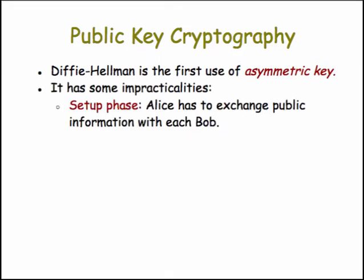As we saw, it requires a setup phase in which Alice has to exchange some public information with Bob — not only with that Bob, but with any Bob she wishes to exchange a key with.